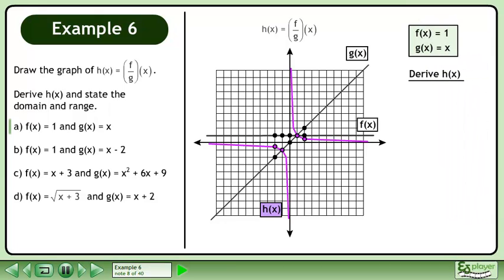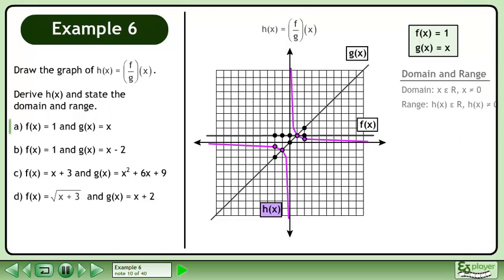Next, we'll derive the function h. Replace f with 1 and replace g with x. This gives us the combined function h equals 1 over x. The domain of h is x belongs to the set of real numbers with the restriction that x cannot equal 0. The range is h belongs to the set of real numbers with the restriction that h cannot equal 0.